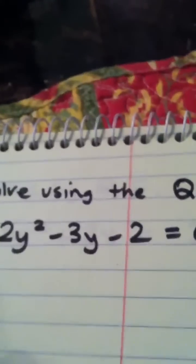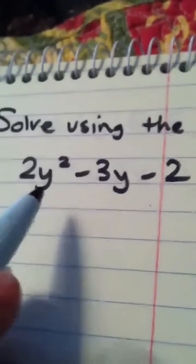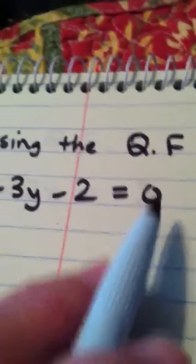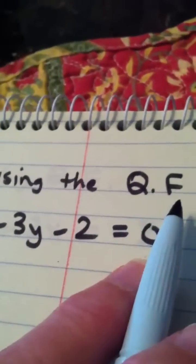Alright ladies and gentlemen, we are asked to solve this equation 2y squared minus 3y minus 2 equals zero by using the quadratic formula.